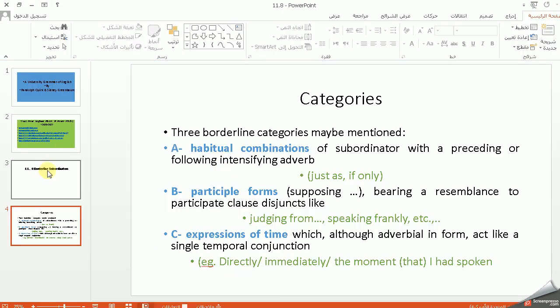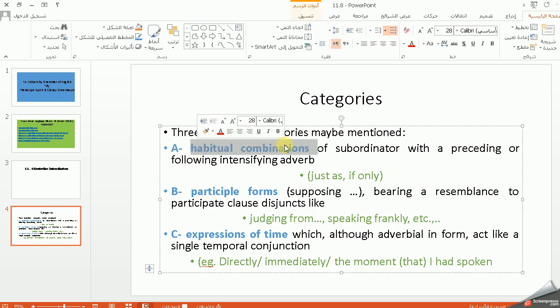If we summarize these three categories: number one is called habitual combination of subordinators with a preceding or following intensifying adverb such as just as or if only. Number two is participle forms such as supposing, and this is the participle clause disjuncts like judging from, speaking frankly. Number C, expressions of time, act like a single temporal conjunction such as directly, immediately, the moment that I had spoken.